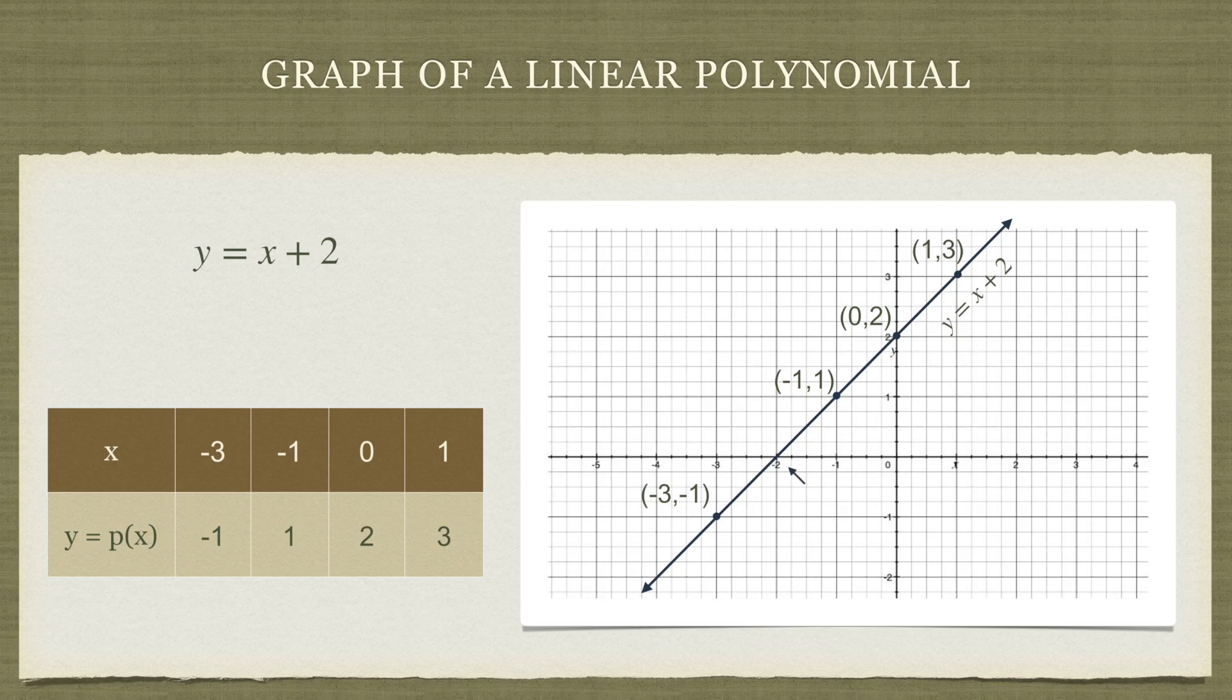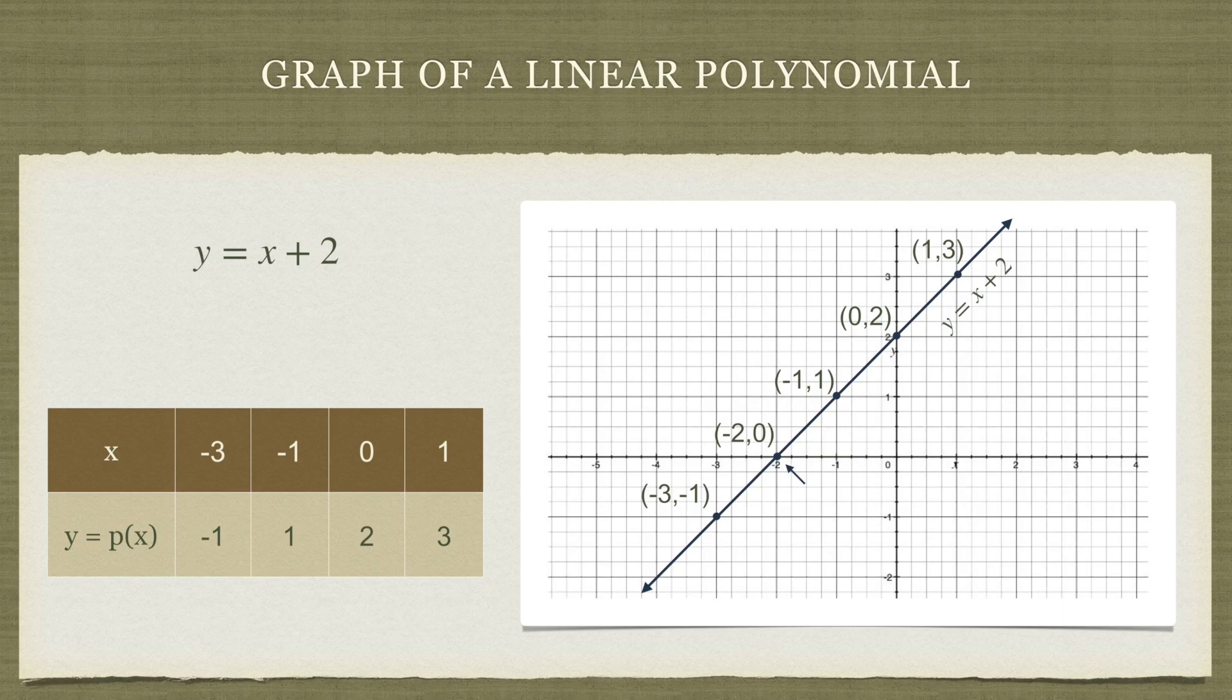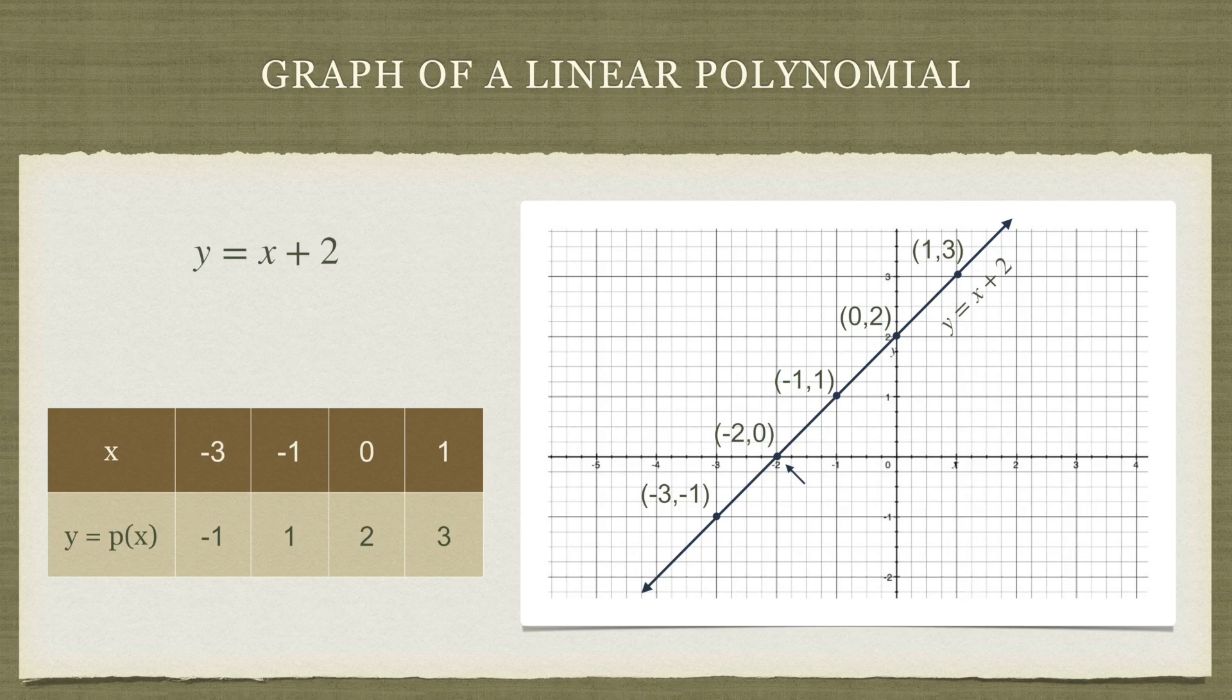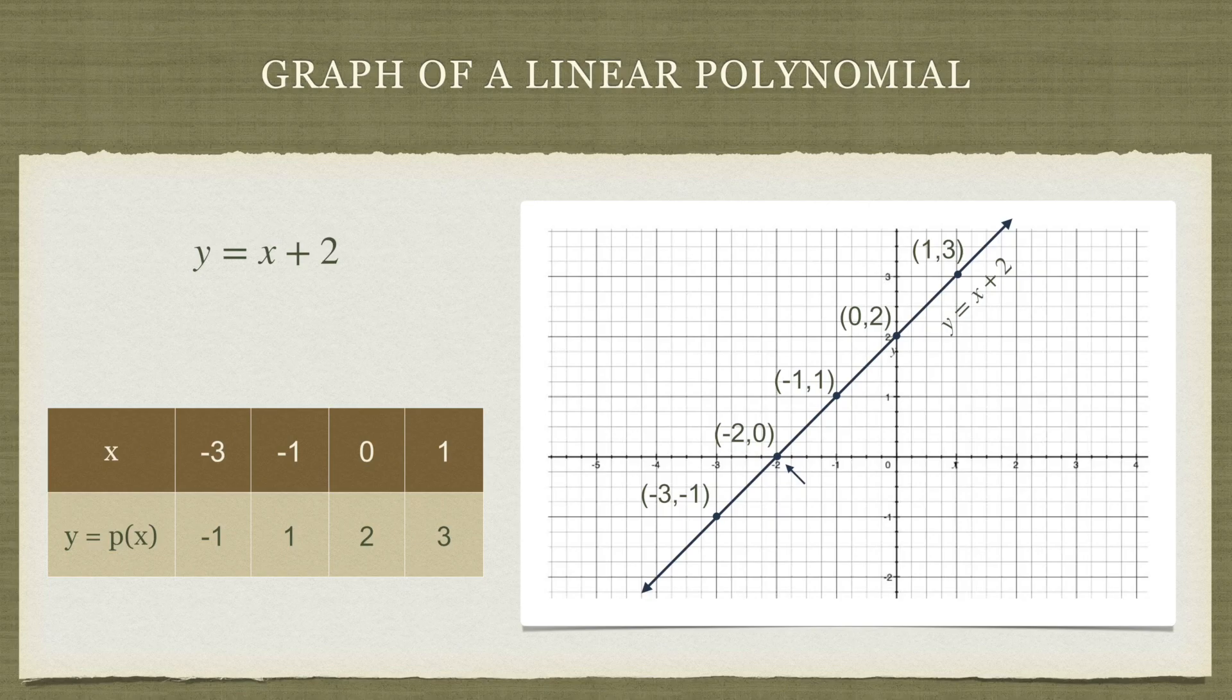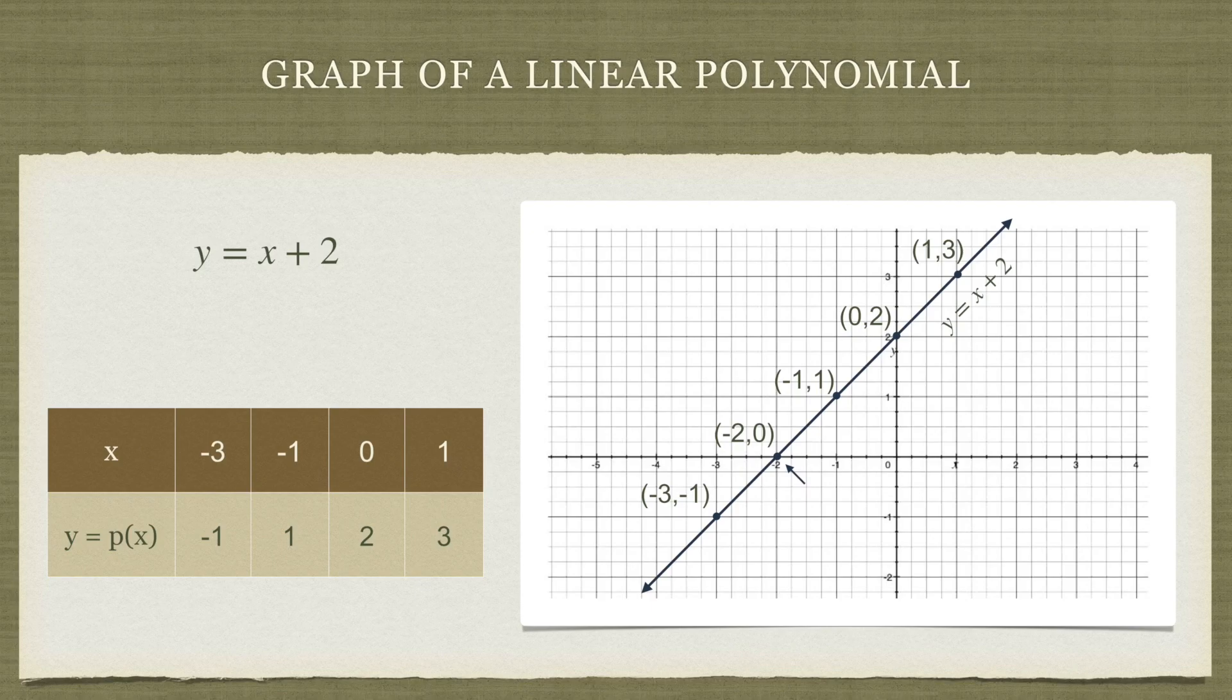Then what happens here? Look at this point closely. What are the coordinates of this point? The coordinates of this point is (-2, 0). That means when x is -2, y is 0. Recall that is the definition of zero of a polynomial. Zero of a polynomial—I'll provide a link here below as well—is such a value of the variable for which the polynomial is 0. So in other words, when we graph a linear polynomial, the point at which the graph intersects the x-axis, the x coordinate gives us the zero of the polynomial.